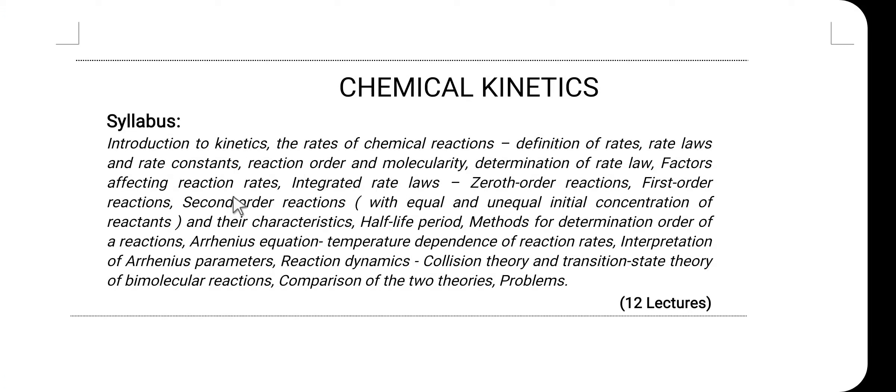Today we are going to discuss some basic terms which are very useful in chemical kinetics. The first basic term is molecularity of the reaction, denoted by the symbol capital M. The molecularity of an elementary reaction is defined as the minimum number of molecules, atoms, or ions of the reactants required — that is, the total number of molecules, atoms, ions, or radicals which take part in the chemical reaction. If only one molecule takes part, it is a unimolecular or monomolecular reaction. If two molecules are involved, it is bimolecular. If three molecules are involved, it is termolecular or trimolecular.